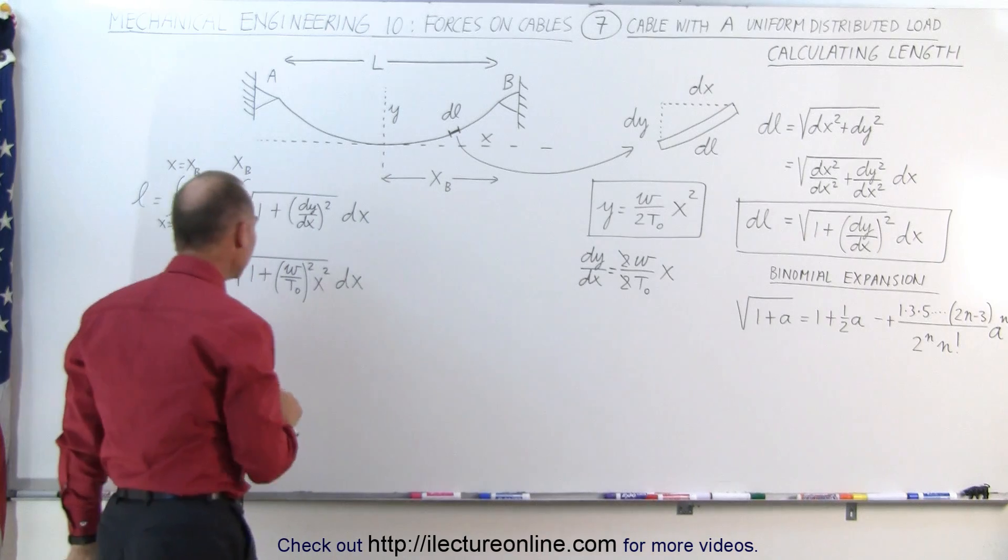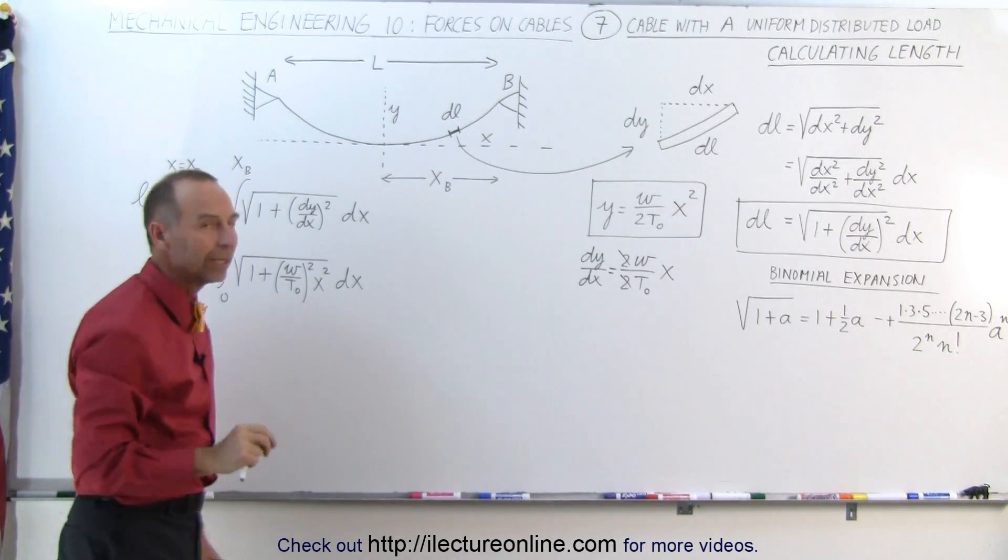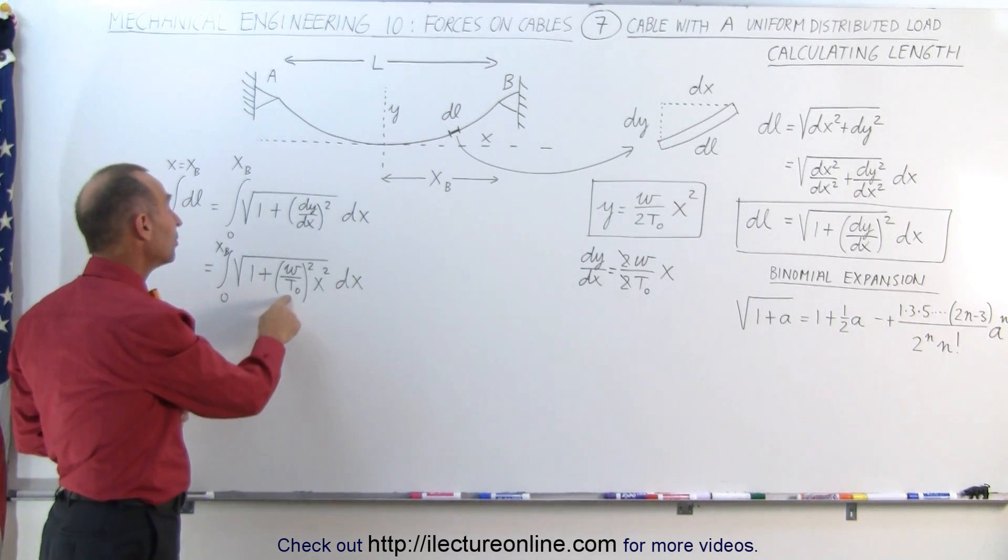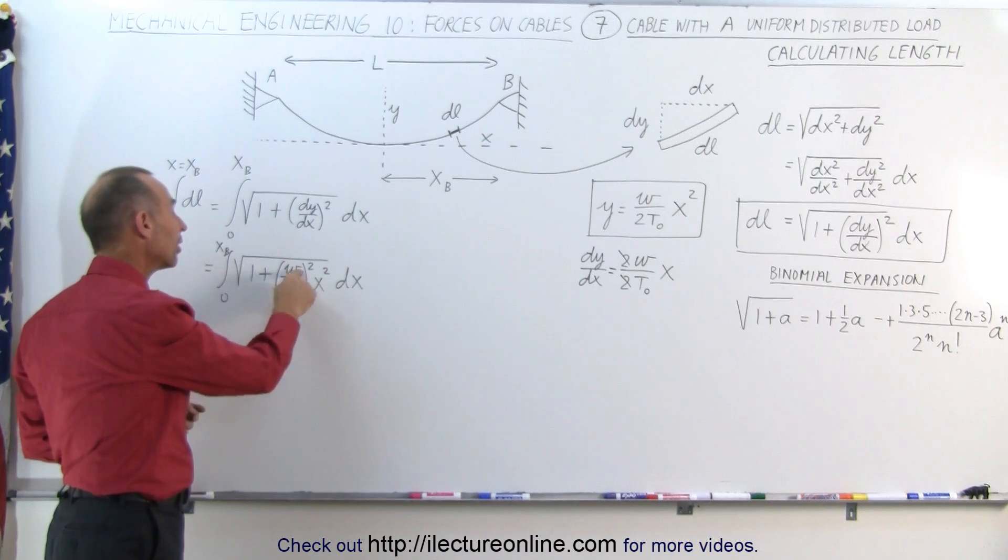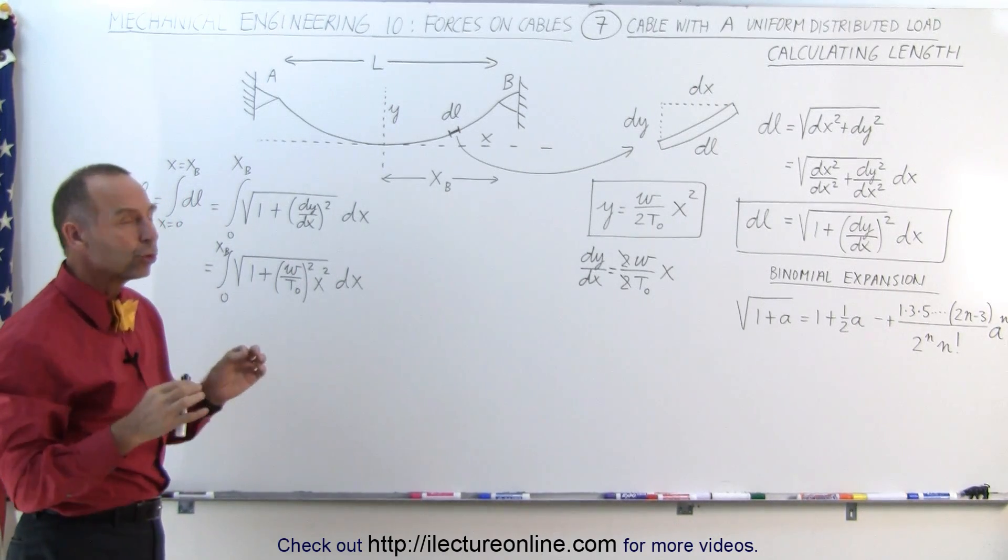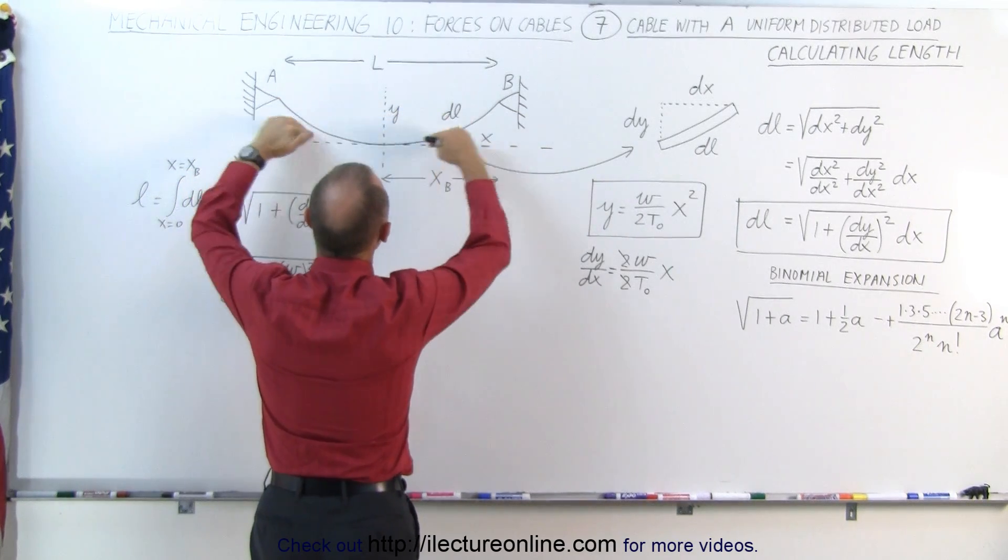So we're going to do that here. Now why can we say that (omega/T sub naught) quantity squared is a small number compared to 1? That would then assume that T sub naught is much, much greater, much larger than omega, the weight per unit length. And that is true if the cable is pulled such that there's not too much of a sag.